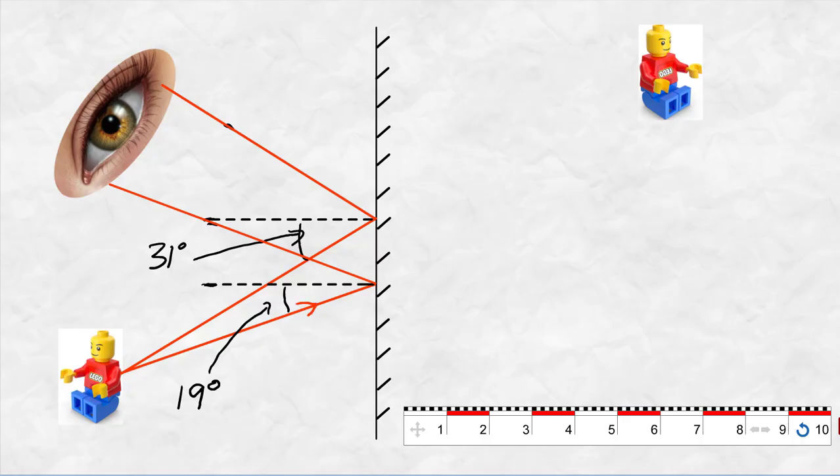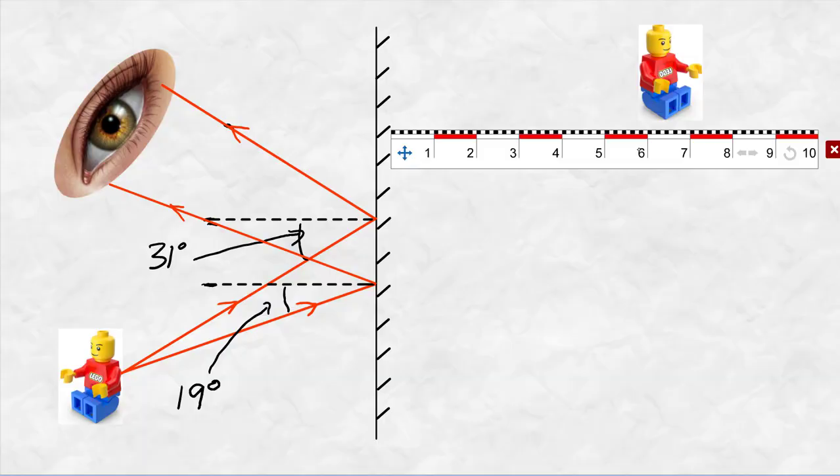Now you'll need to get a ruler because the human eye, or the brain, will be thinking that the light is traveling in straight lines. So I use dotted lines to mark where the light rays come from, and where they cross will be the location of where the image is.